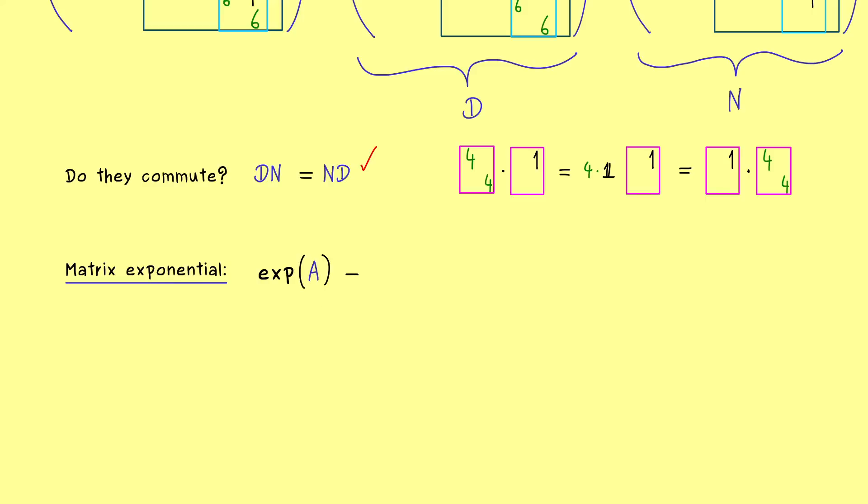And the construction is like you know it from the exponential function. First, you start with the constant 1, which is the identity matrix in our case. Then comes the linear factor, which is the matrix A itself. And then 1 half the matrix squared. Plus 1 divided by 3 factorial, times A cubed. And this just continues, so you see, we have an infinite series of matrices.